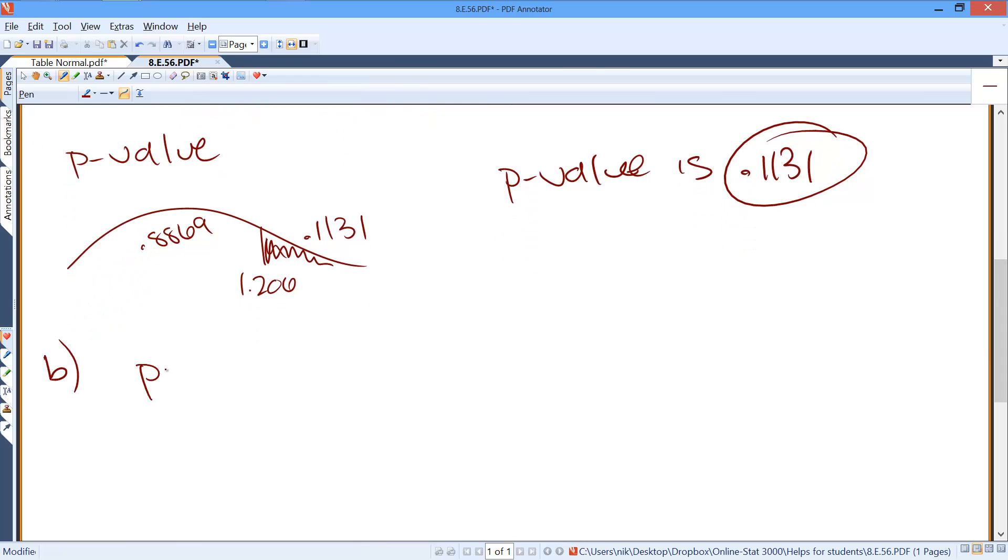So that means our true population proportion, unfortunately, really is 0.5. We still had our null hypothesis that p equals 0.2.